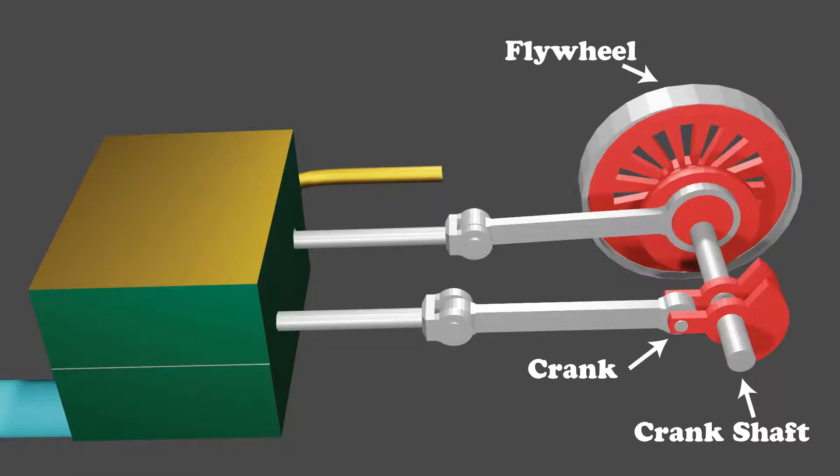The heavy flywheel is there to smooth the rotation of the crankshaft as the piston changes direction. It is often used to drive other equipment using a long leather or canvas belt.